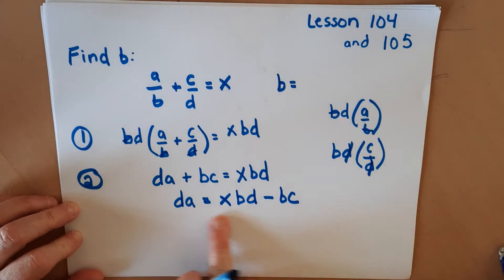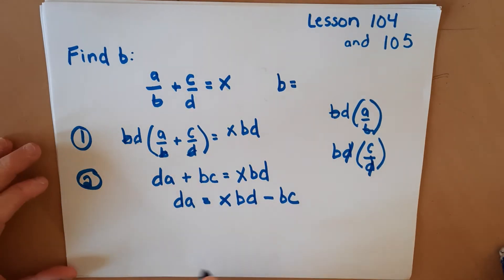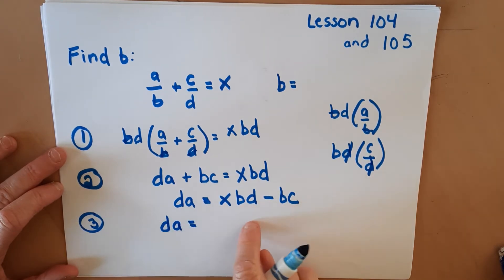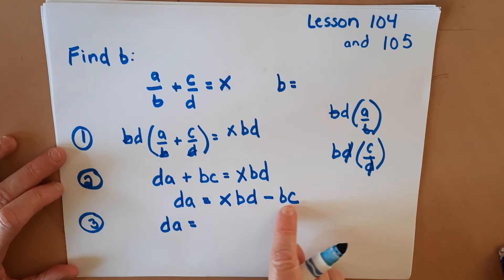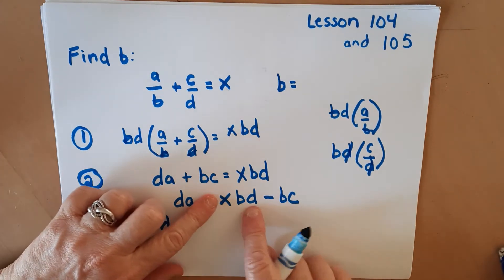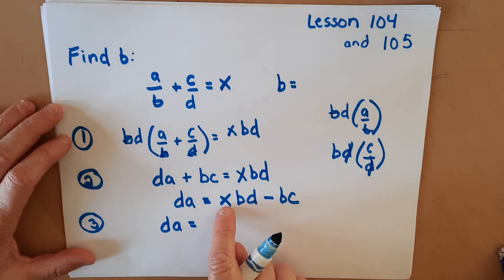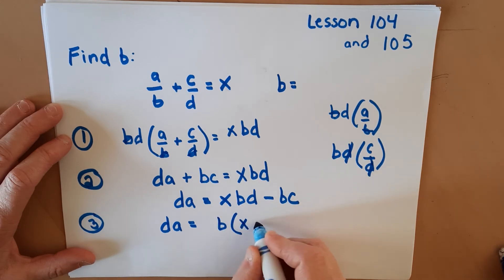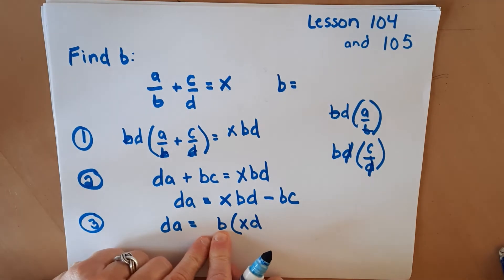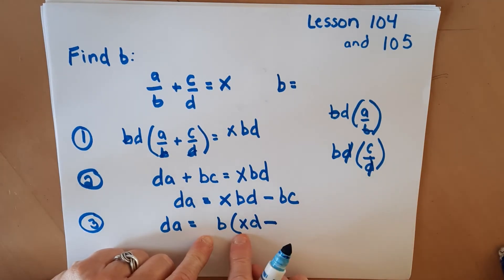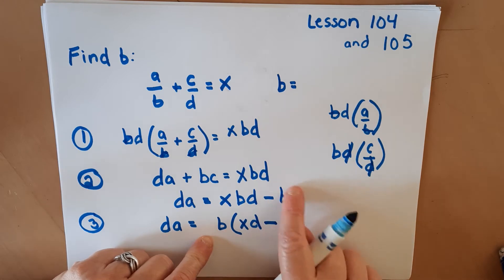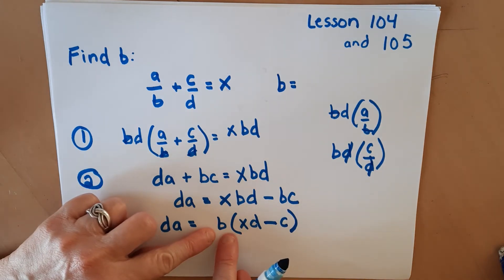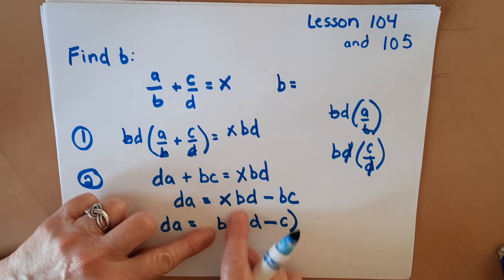Now all the B's are on one side, but we need B just by itself. So the third step is to factor out the B from each of these terms — that means doing the opposite of the distributive property. We put B on the outside of parentheses: BD divided by B leaves XD, and BC divided by B leaves C. So we rewrite it as B times (XD minus C), and you can verify this with the distributive property.